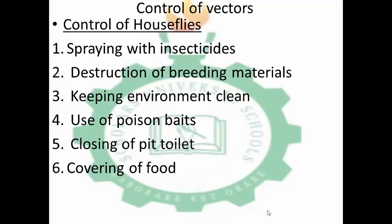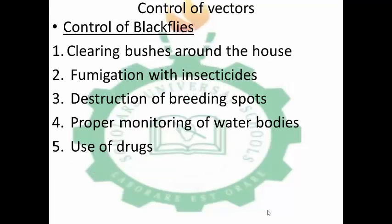For control of house flies: spraying with insecticides, destruction of breeding materials, keeping the environment clean, using poison beads, closing of feed stores, and covering of food. Controlling house flies helps control the spread of cholera.